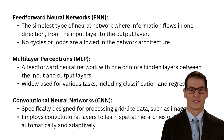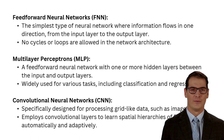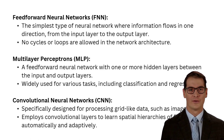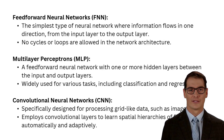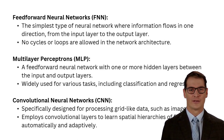Feedforward neural networks take information from input layers to output layers in a single direction. Multi-layer perceptrons are networks with one or more hidden layers of processing, which can be used for a variety of tasks. Convolutional neural networks are designed for specific purposes such as processing data like images, using convolutional layers to create hierarchies and adapt automatically.